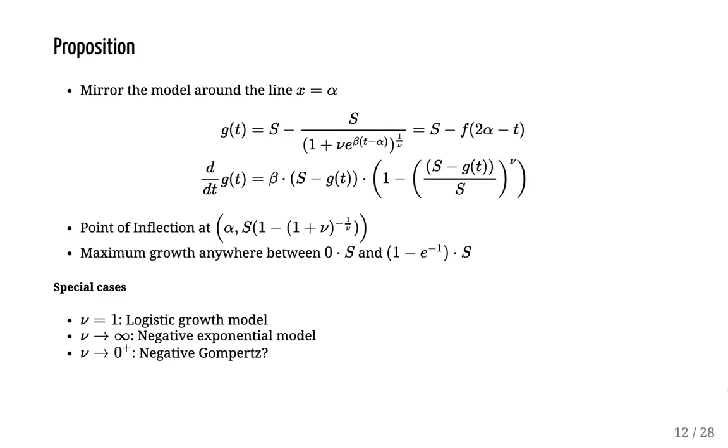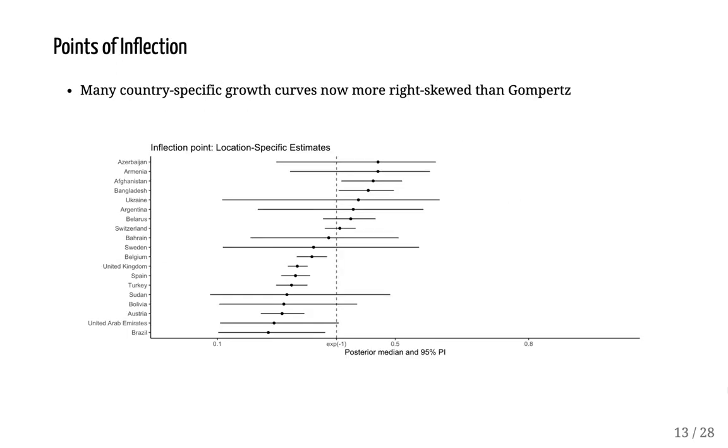To try to ameliorate this lack of fit, we proposed to mirror the model around the point of inflection at alpha. This was because the Richards model can have as much left skew as we want. So if we mirror it, then we will have as much right skew as we want. And it turned out that by doing this simple manipulation, the model can fit to the data much better and estimate inflection points well beyond that of the Gompertz model. We see here that a lot of posterior mass is in places which would not have been possible given the previous parametrization.